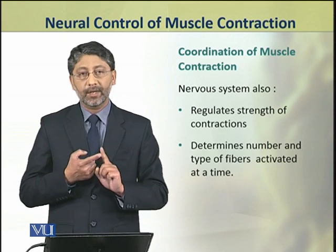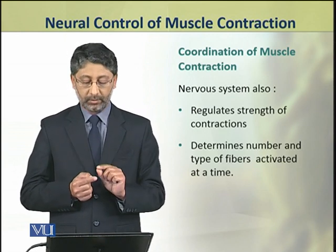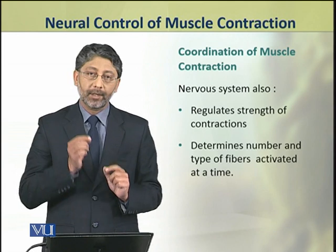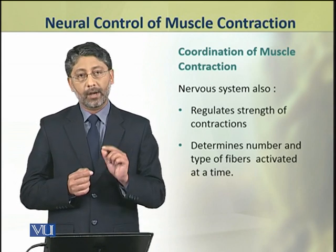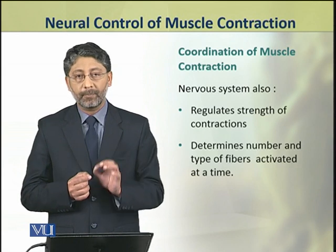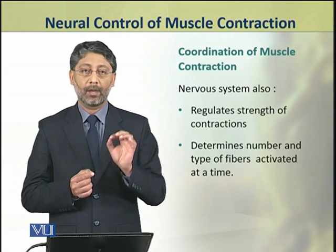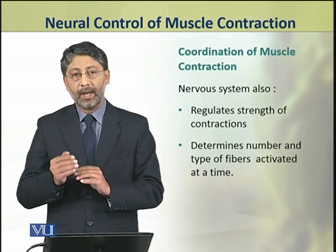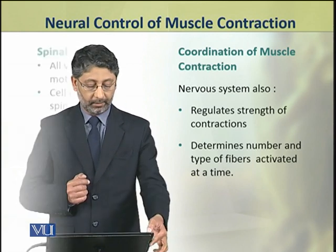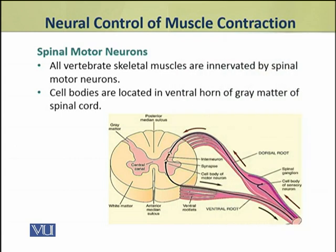The nervous system also regulates the strength of contraction of muscles and determines the number and type of muscle fibers activated at a time. All vertebrate skeletal muscles are innervated by spinal motor neurons.